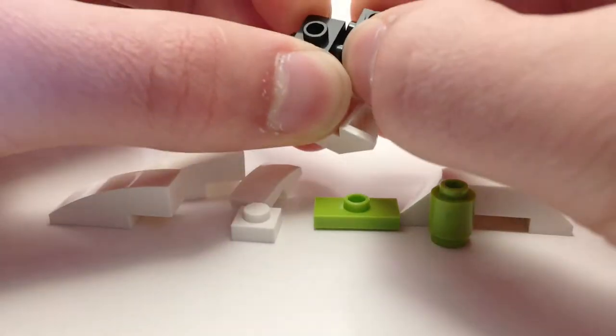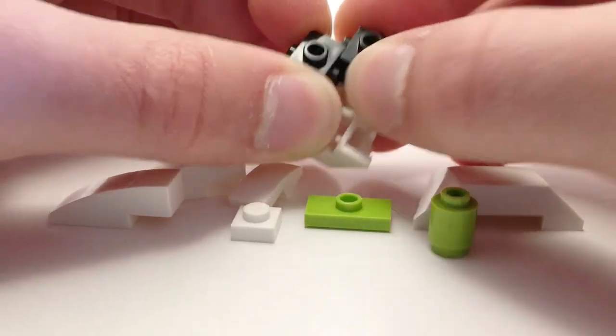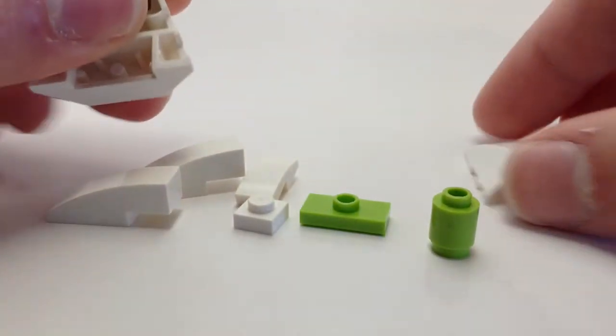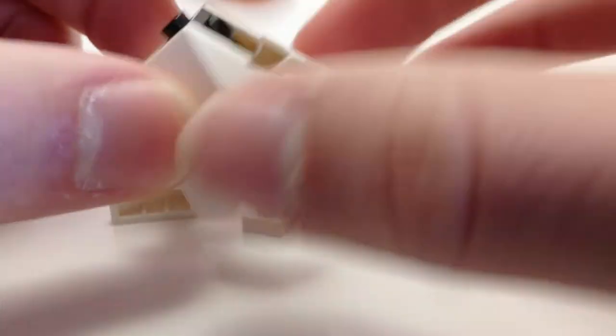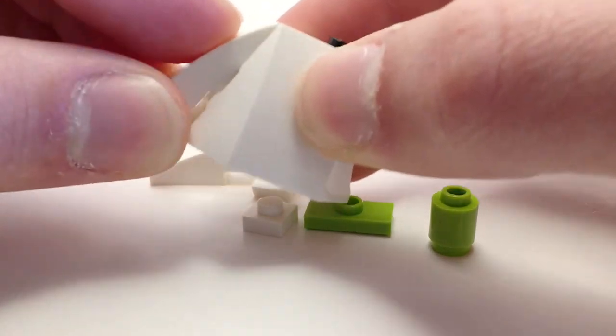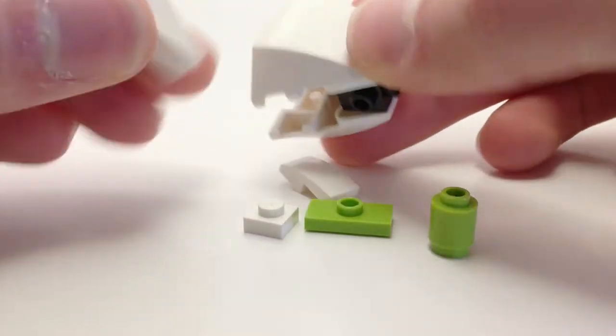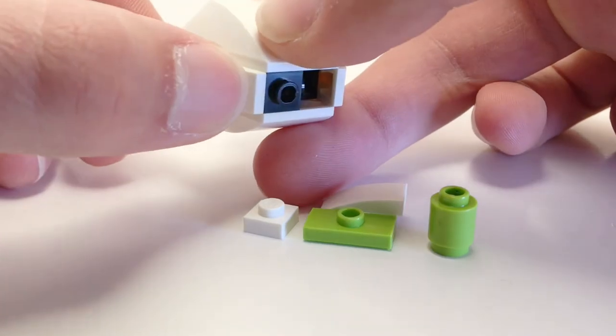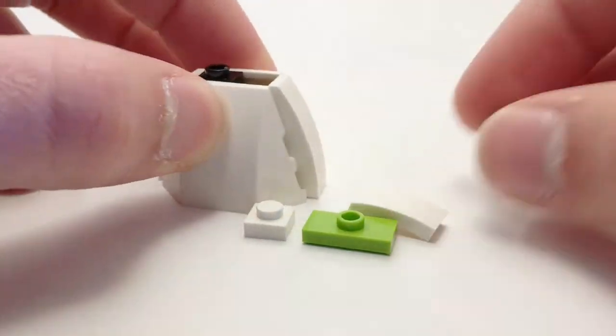Those just fit together like so and then a second one of these sloped pieces goes on right there. To form the sides we have a couple one by three slopes that attach to the sides of those one by ones.